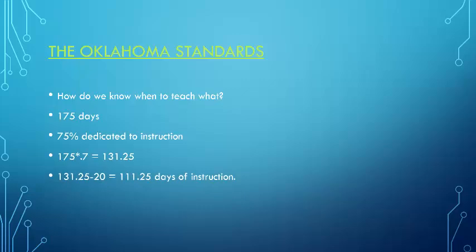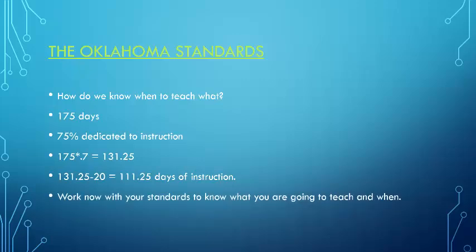We know state assessments are typically given about a month before school ends, so we need to subtract another 20 days from that 131. This tells us we have about 111 to 115 days of real instructional time. This matters because you have to cover all the standards within those 112 to 115 days — you can't plan instruction from day one all the way to day 175. You have to finish before the state assessment.